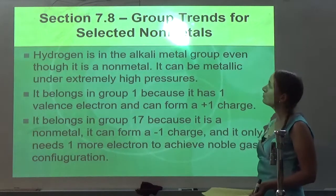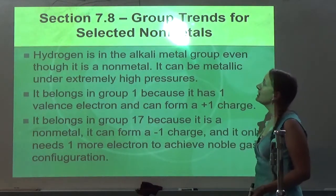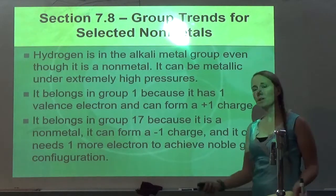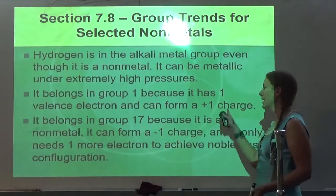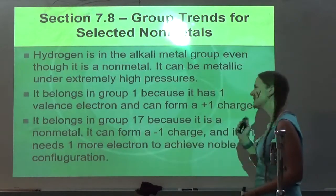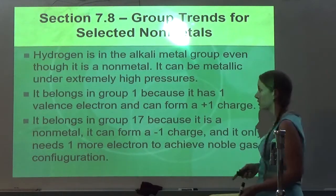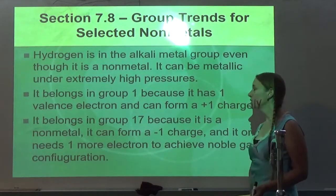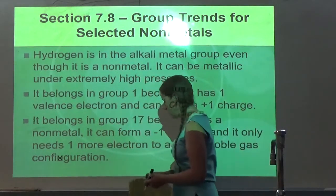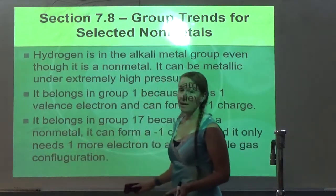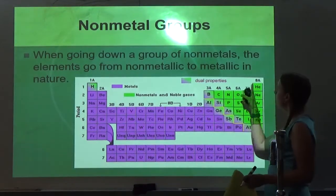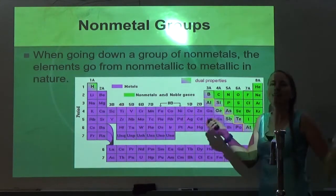So last section is 7.8. This is group trends for selected non-metals. Hydrogen is in the alkali metal group, even though it is a non-metal. It can be metallic under extremely high pressures. It belongs in group 1, because it has one valence electron, and can form a positive 1 charge, like all the alkali metals. However, it kind of belongs in group 17, because it is a non-metal, and it can form a negative 1 charge, like all the other halogens. And it only needs one more electron to achieve noble gas configuration. That's why some periodic tables, you'll see hydrogen in its normal spot, but then you'll see hydrogen added over here, because it kind of belongs in both places.